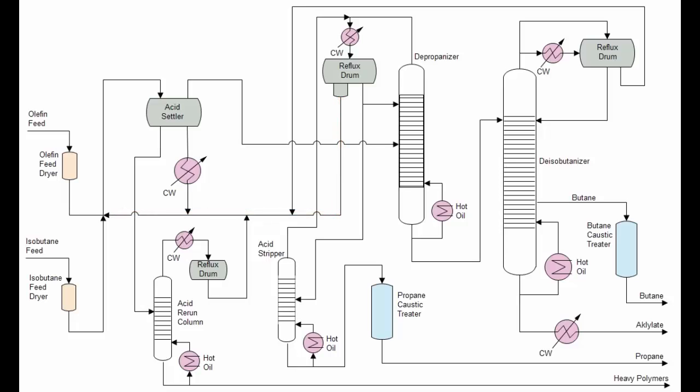The propane product is then sent to an acid stripper that removes a considerable portion of any remaining acid to the top of the reflux drum. The bottoms propane product is then treated with caustic to remove any trace hydrofluoric acid before being sent to storage.